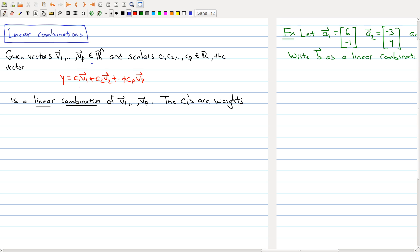The vector that is written as c₁ times the first vector plus c₂ times the second vector and so on is called a linear combination of v₁ through vₚ. The cᵢ's are called the weights of our linear combination.